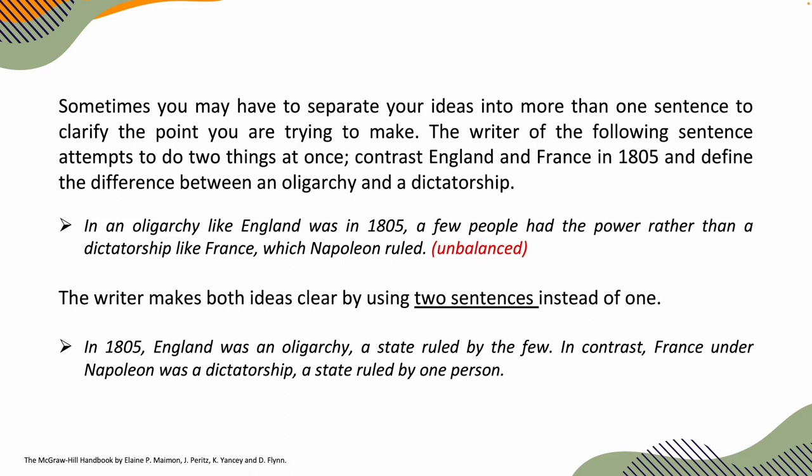The writer makes both ideas clearer by using two sentences instead of one: 'In 1805, England was an oligarchy, a state ruled by the few. In contrast, France under Napoleon was a dictatorship, a state ruled by one person.' This sounds much better.